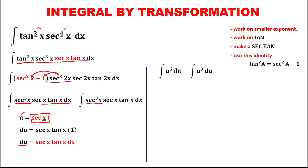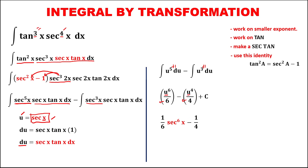Using u-substitution, let u equal secant x. The derivative of secant x is secant x tangent x times 1, so du equals secant x tangent x dx. Substituting: the integral of u to the power 5 du minus the integral of u to the power 3 du. Applying the power rule: u to the power 6 over 6, minus u to the power 4 over 4. Back-substituting u equals secant x: 1 over 6 times secant to the power 6 x, minus 1 over 4 times secant to the power 4 x, plus C. This can be written as secant to the power 6 x over 6, minus secant to the power 4 x over 4, plus C.